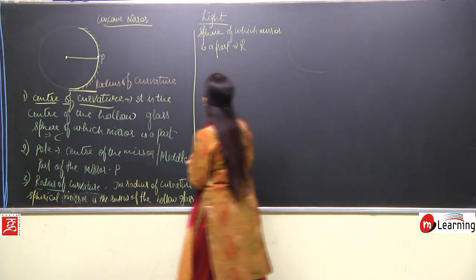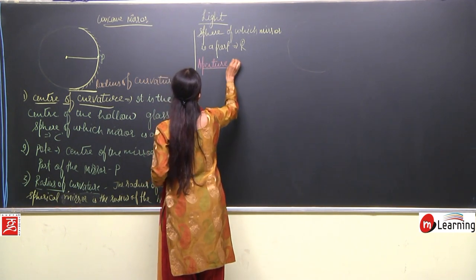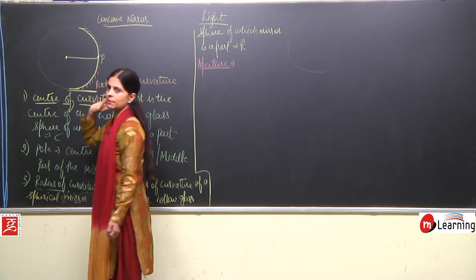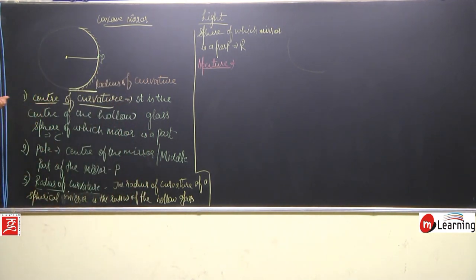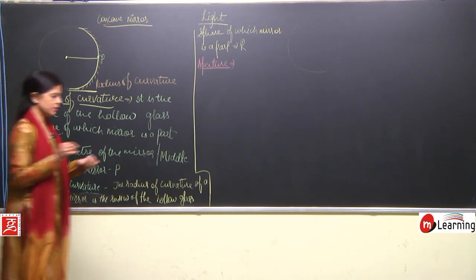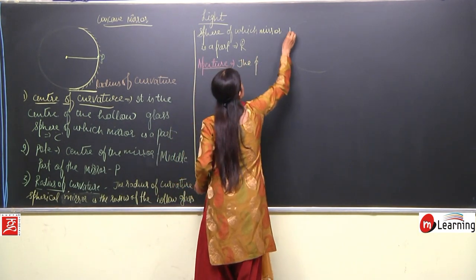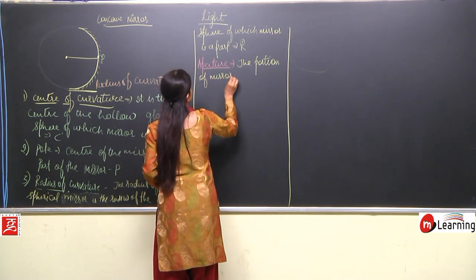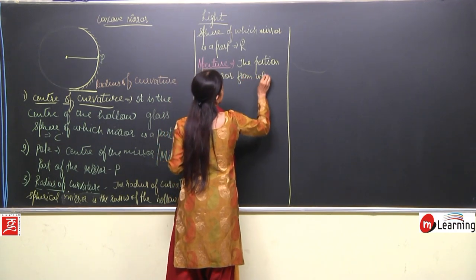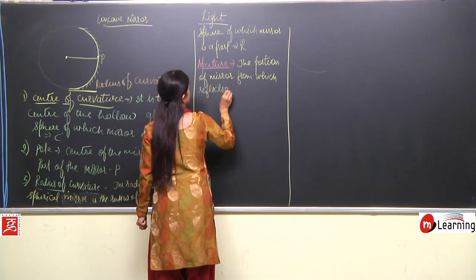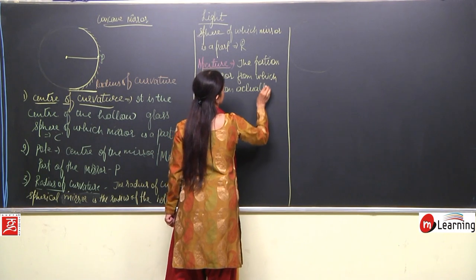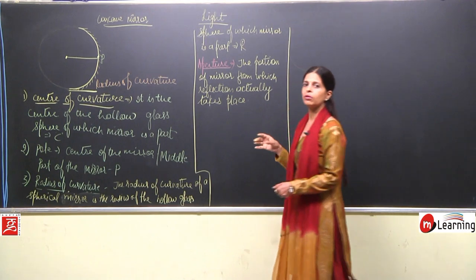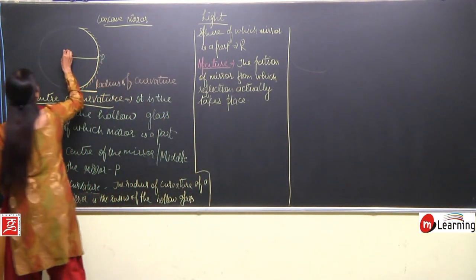Now we will talk about aperture. Aperture is the actual reflecting surface — the part from where the reflection takes place. So aperture is defined as the portion of a mirror from which reflection actually takes place.